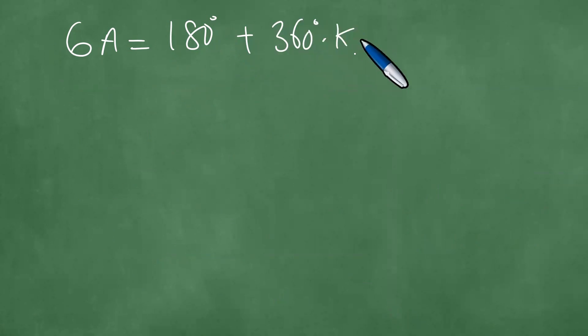Now we divide both left and right by 6, getting A = 30 degrees plus 60 degrees times k, where k is an element of Z.